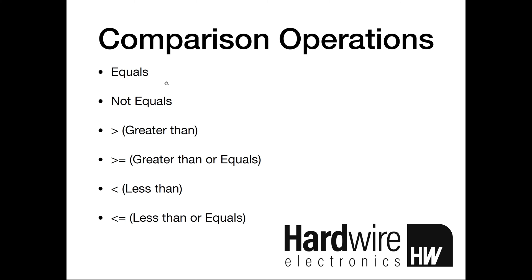Equals compares two things, A and B. A equals B will evaluate to true when A and B are exactly the same, and false when they are different. Not equals is the opposite — A not equals B will be true when A and B are different, and false when they are exactly the same. Greater than compares A and B: A greater than B is true when A is higher than B, false when A is lower than B, and also false when A and B are exactly the same.